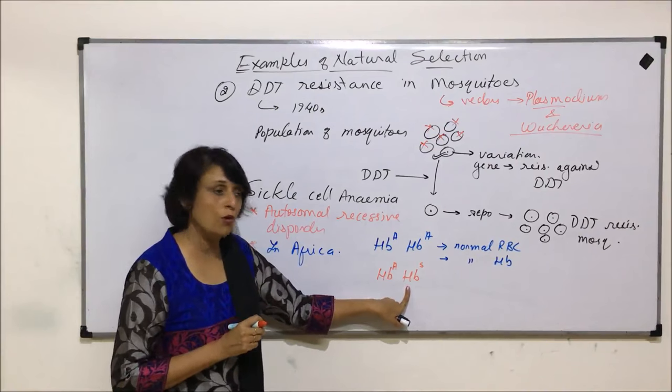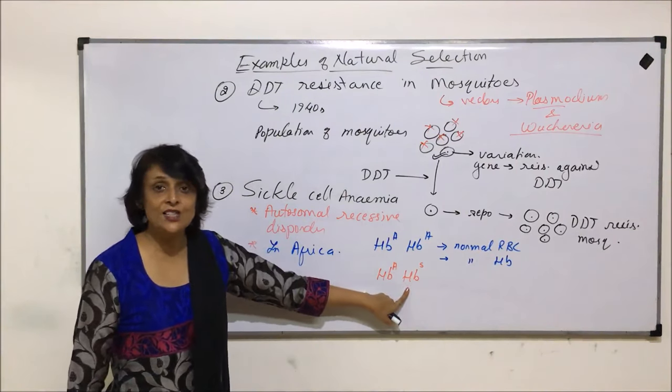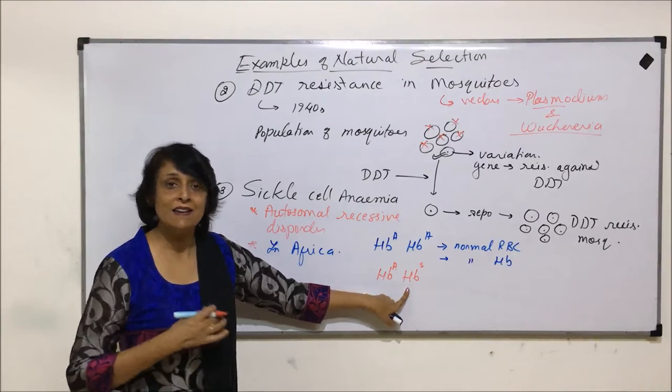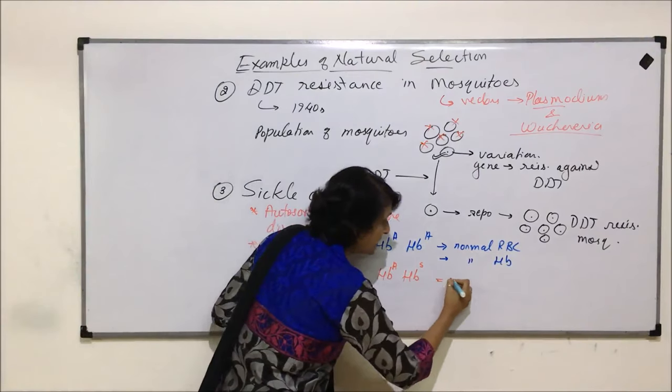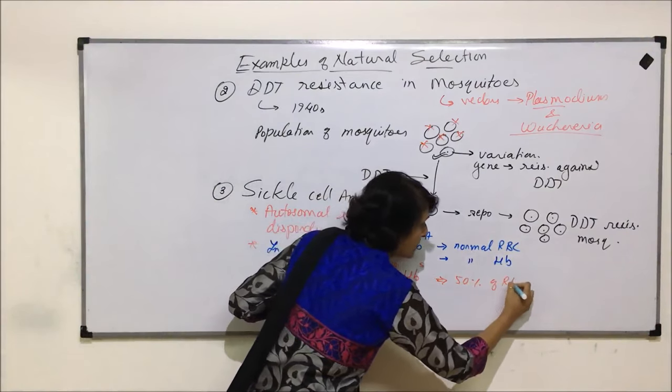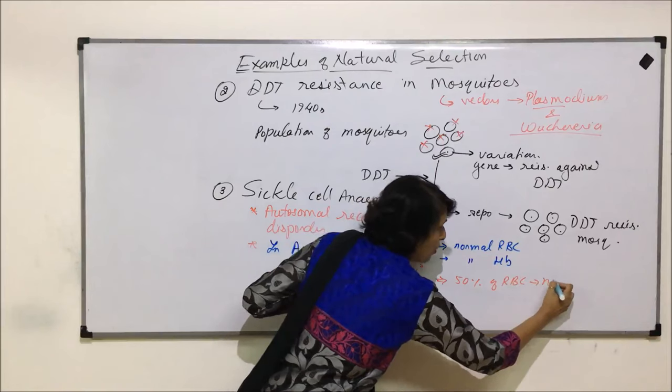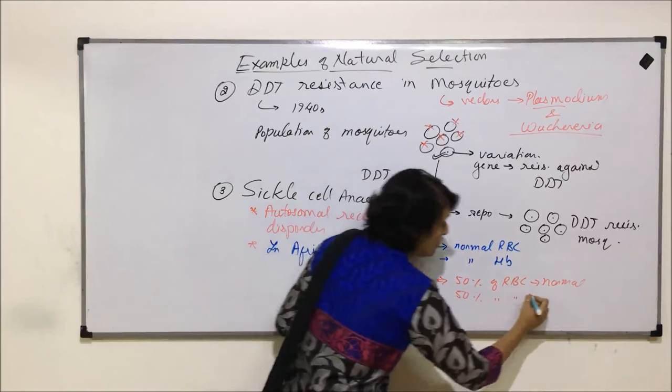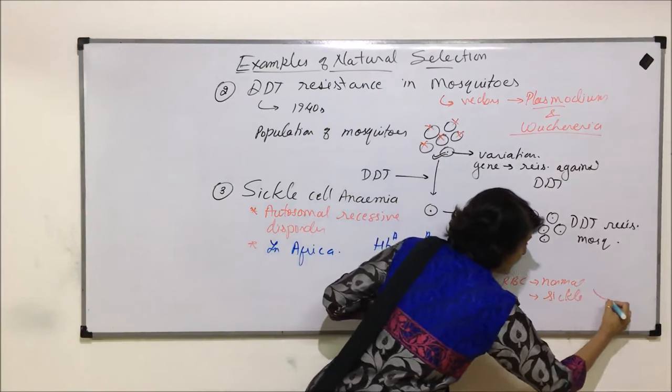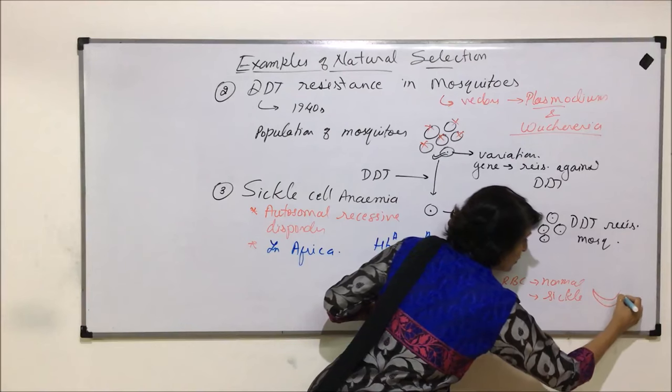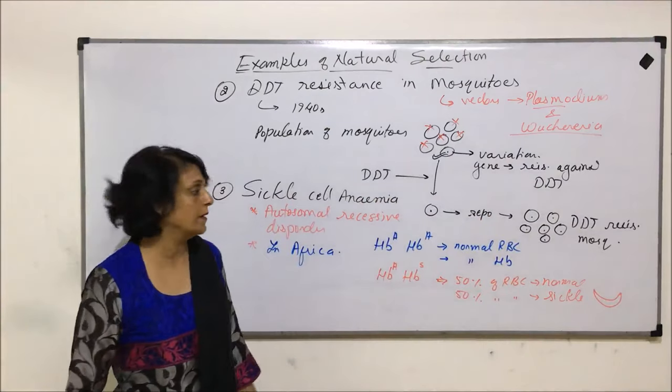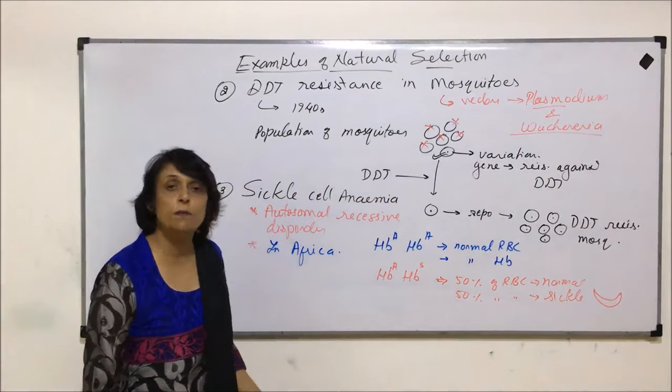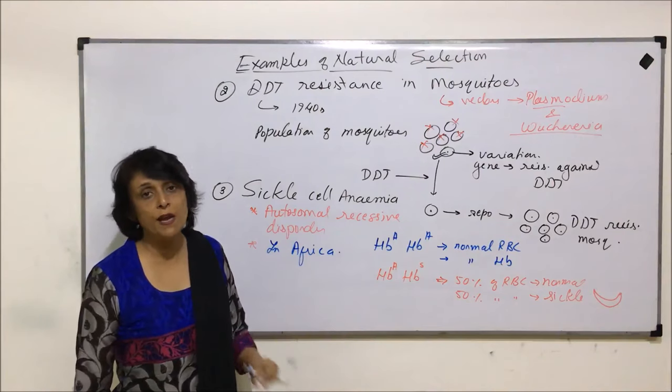What is the change in the hemoglobin? The change is in the beta chain, at sixth position, glutamic acid gets replaced by valine. In this case, 50% of RBCs are going to be normal and 50% of RBCs are going to be sickle shape - that is, instead of the normal circular shape, the RBCs would look like a sickle. Plus, 50% hemoglobin molecules are going to be normal and 50% of hemoglobin will be faulty.